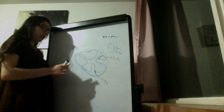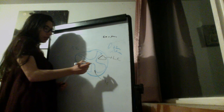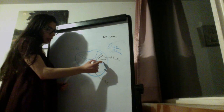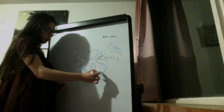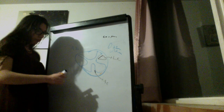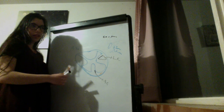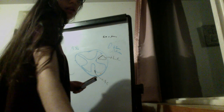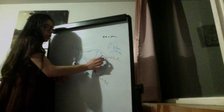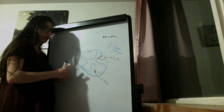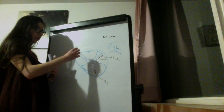Then we have the vestibulospinal tract, located here. We also have the hypothalamospinal tract, which is a descending tract, and it's mostly here, together with the lateral corticospinal tract.